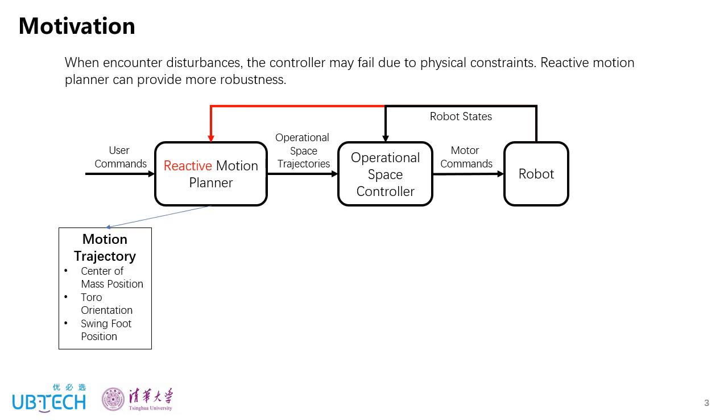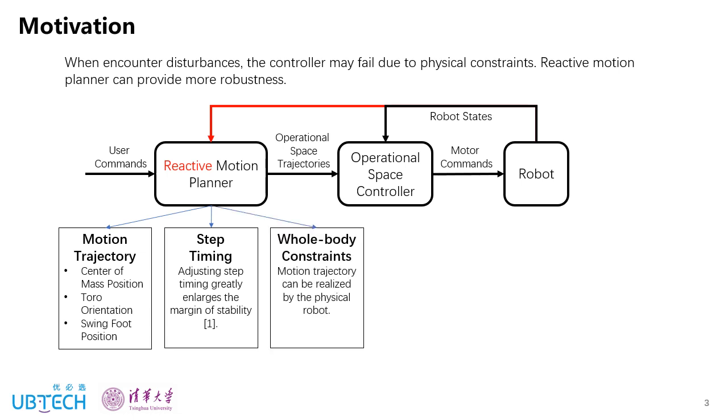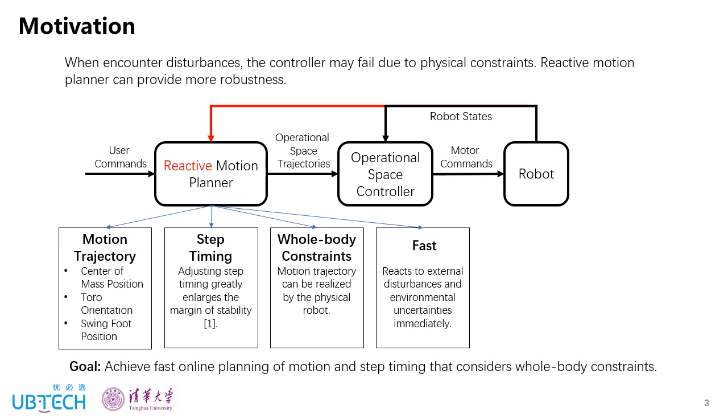There are several properties we want for this reactive planner. First, it can adjust the motion trajectory including the COM position, the torso orientation, and the swing foot position. Secondly, it can also adjust the step timing as this greatly enlarges the margin of stability. Thirdly, the generated motion should satisfy the whole body constraints so that it can be realized by the physical robot. And last, it should be fast so that it can react immediately. So overall, our goal is to achieve fast online planning of motion and step timing that considers whole body constraints.